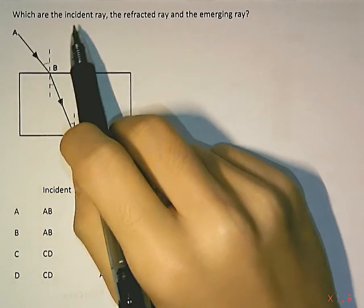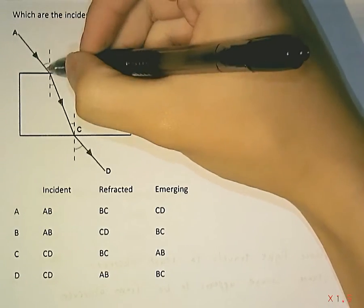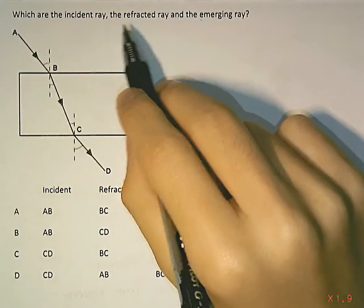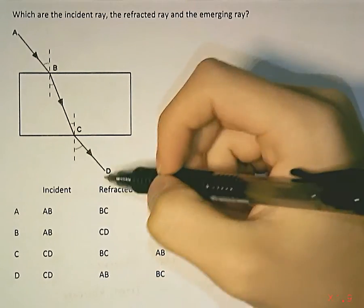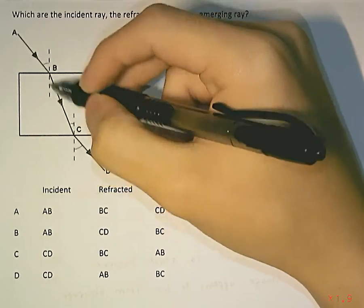Our incident ray is the one that's going to be incoming. It's going to be ray AB. Refracted ray is the one that bends. I know there are two rays that bend over here, but the first one over here is going to be your refracted ray.